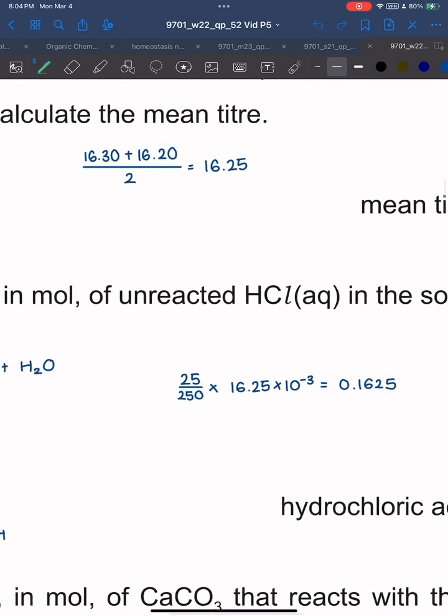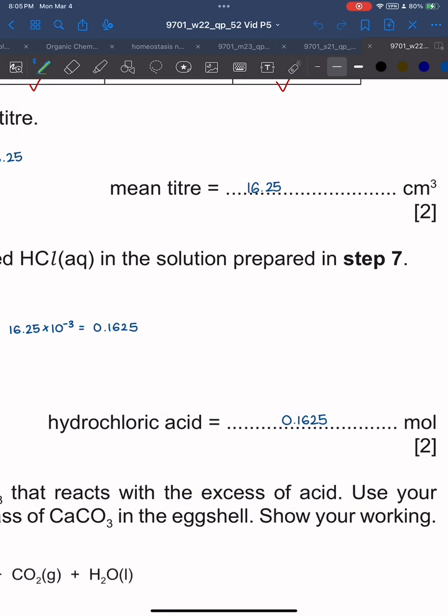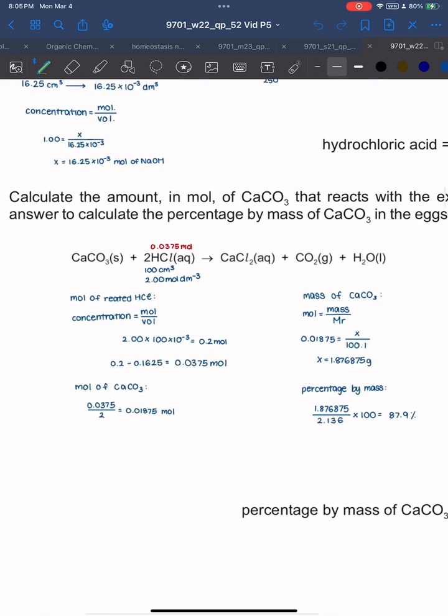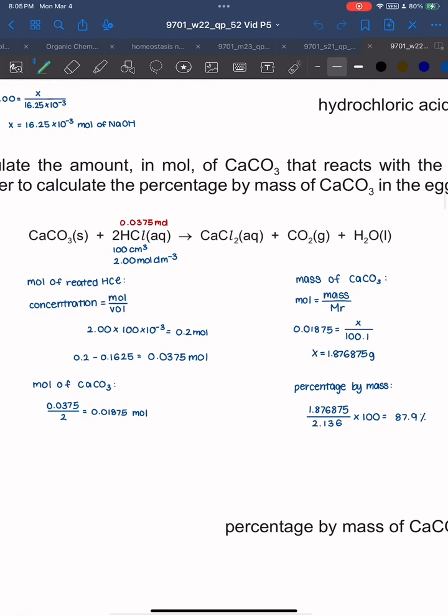Calculate the amount in moles of CaCO3 that reacts with the excess acid. Use your answer to calculate the percentage by mass of CaCO3 in the eggshell, showing your working. I've copied the equation there.